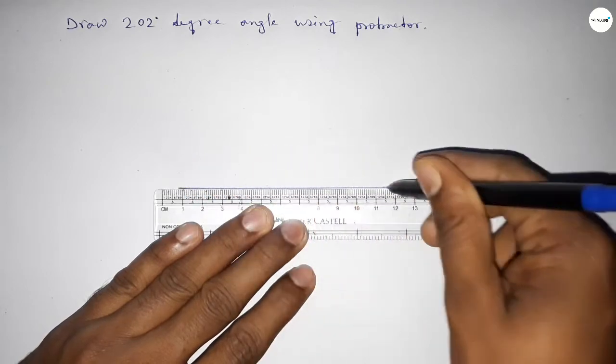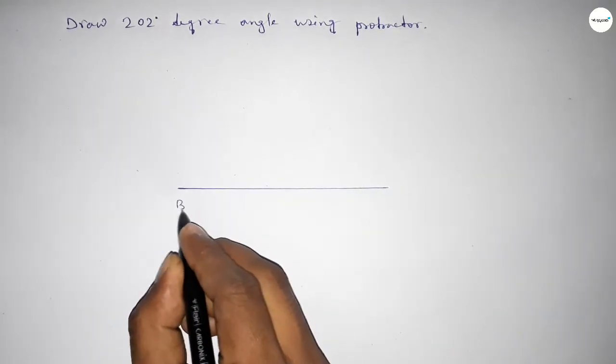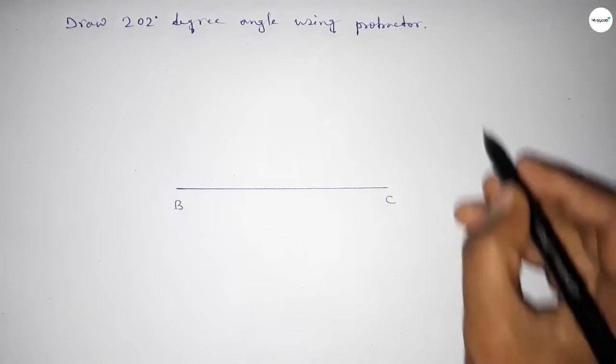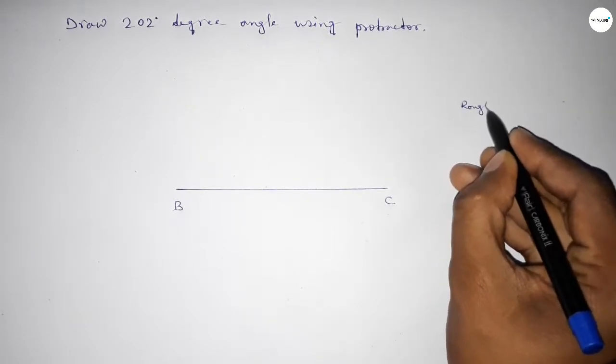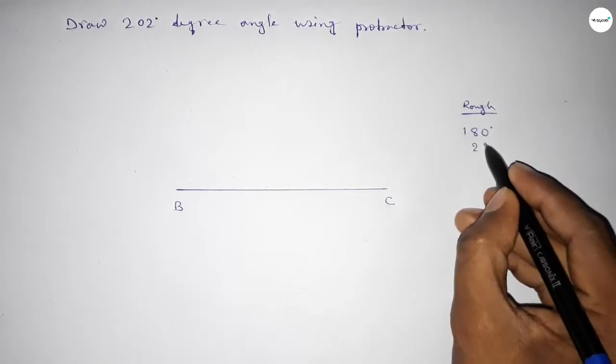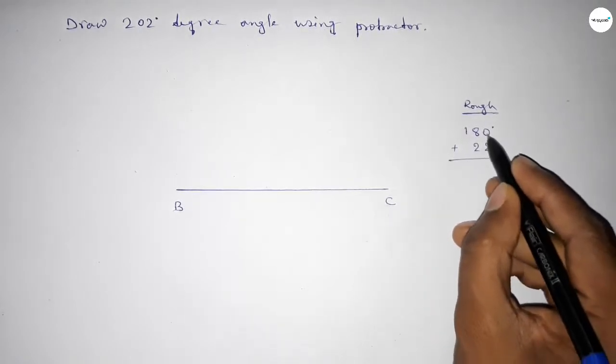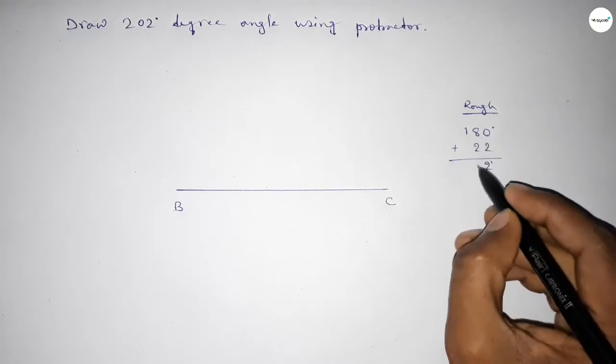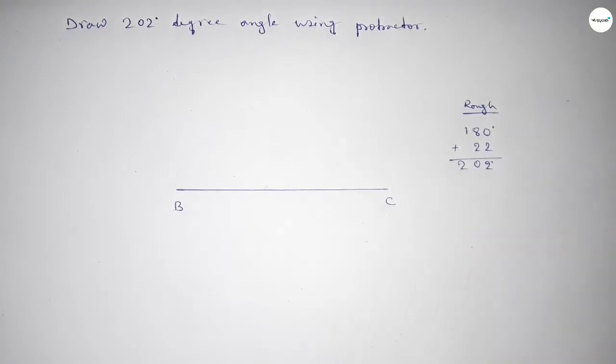Taking here point B and here C. Now roughly discussing some calculation: if we add 22 degree angle with 180 degrees, then we can get 202 degree angle. So this is 180 plus 22 equals 202.